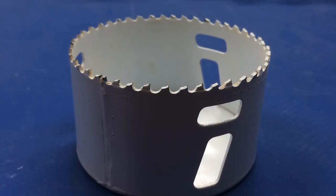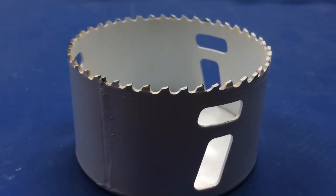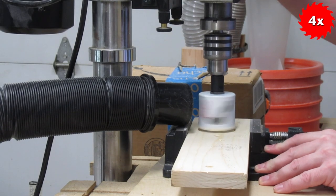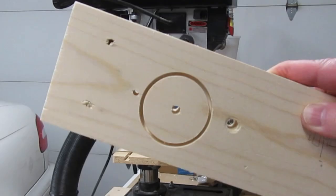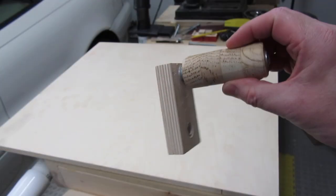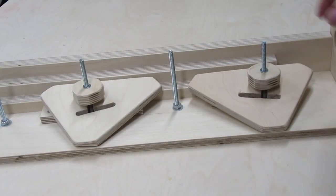They're called hole saws instead of hole bits, and you can see why in this picture. They have teeth like a saw blade. They actually saw a circle out of the wood, instead of just obliterating the entire hole like normal drill bits do. You can throw the circle away, or you can use it for making things like knobs. In fact, I use hole saws to make knobs all the time.